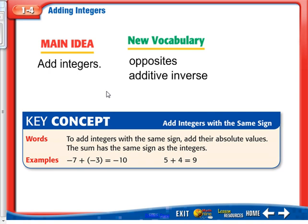In lesson 1-4, we're going to be adding integers. Some vocabulary: opposites and the additive inverse. Basically, the additive inverse says that if you're going to subtract a negative number, it would be the same thing as adding it. Like, 3 minus 3 is the same thing as 3 plus negative 3. Both will equal 0.